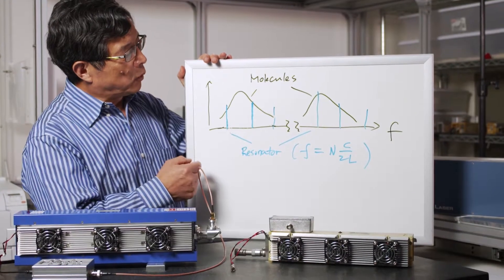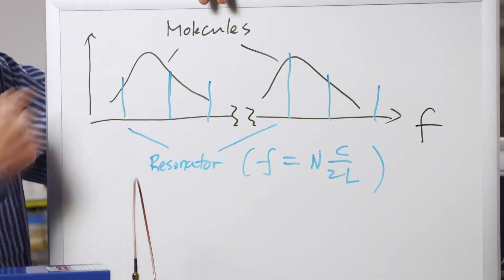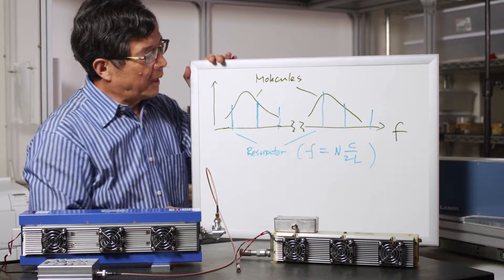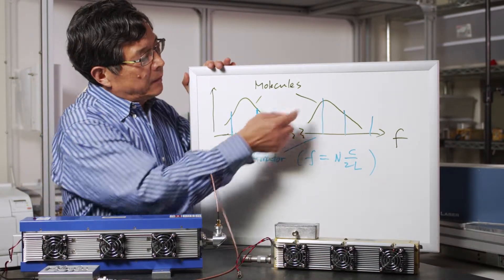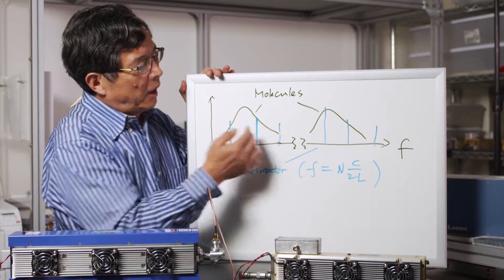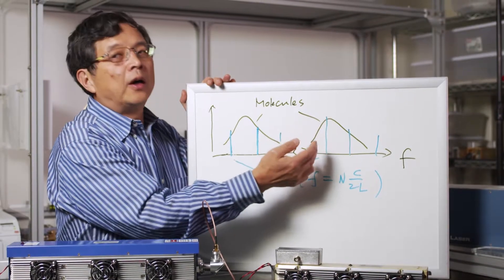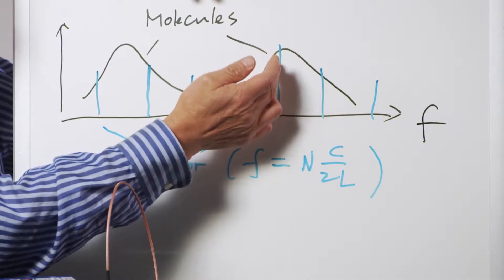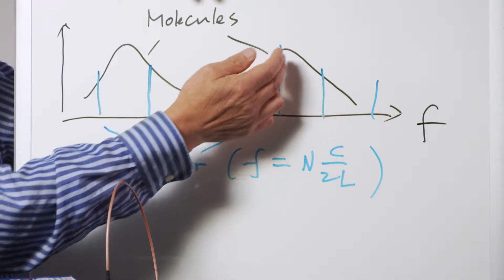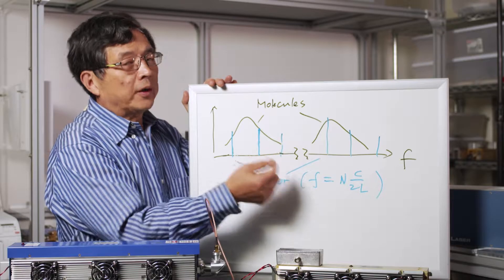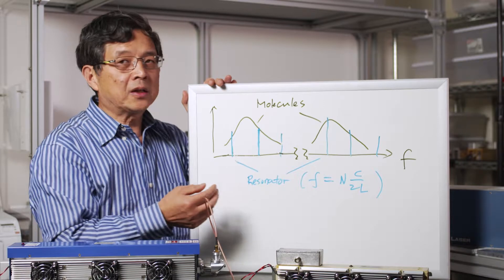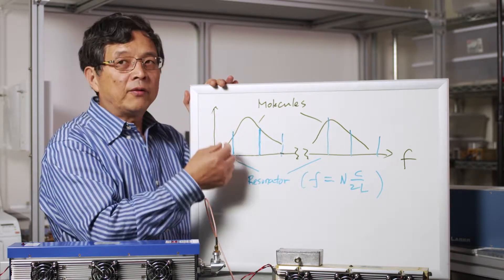If you remember from your freshman physics that wavelength and frequency are connected through the speed of light, you are correct. However, in CO2 lasers, we use these two terms slightly differently. On this whiteboard, I'm illustrating molecular lines in the frequency domain — these are two molecular lines. If you have a laser operating between these two lines, we call it a line hop, or wavelength instability. On the other hand, if your laser is moving slightly within one wavelength, we call it frequency instability. This is the distinction in CO2 lasers between wavelength and frequency.